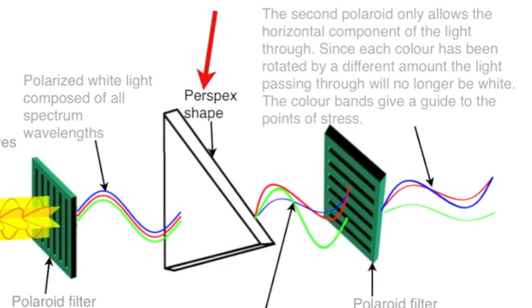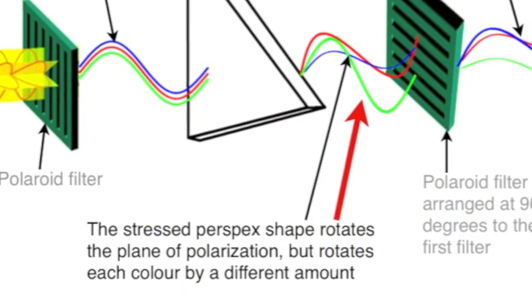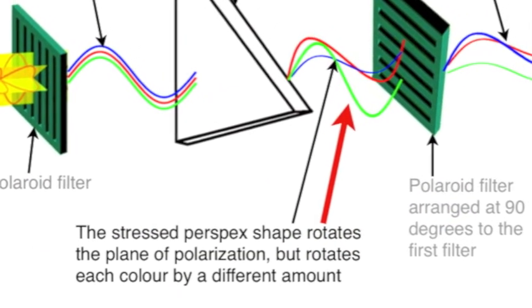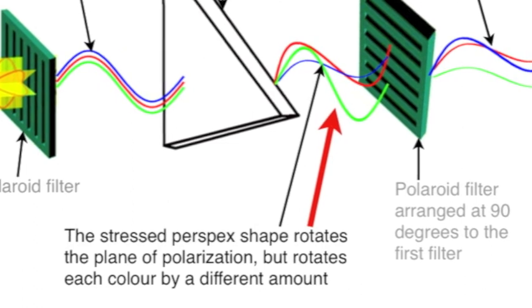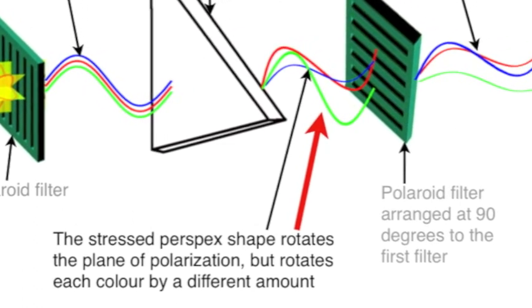This perspex, particularly when it's stressed, rotates the plane of polarization of the light, but rotates each color by a different amount.